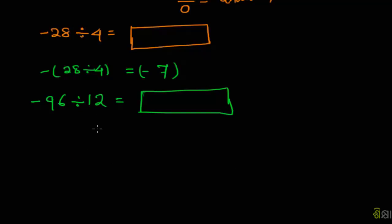96 divided by 96 divided by 12. This is 12, 96. This is 8. This is minus. This is minus 8. This is minus 36.